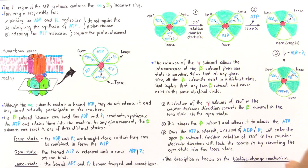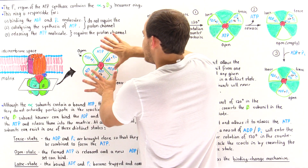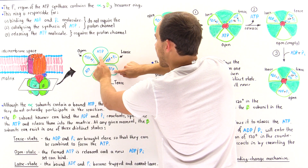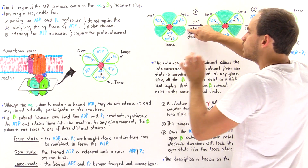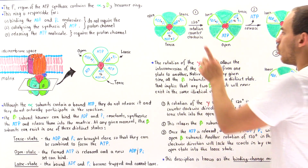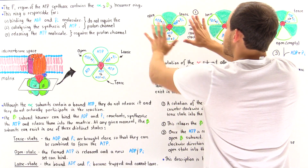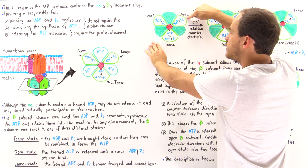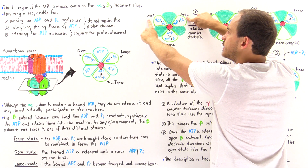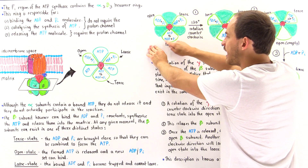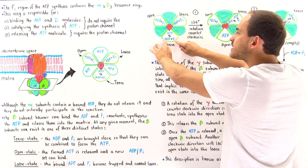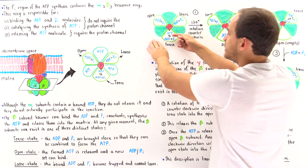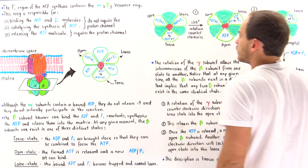Let's begin with the initial diagram. Note that I've omitted ATP from the alpha subunits since they don't participate in catalysis — only the beta subunits do. In this conformation, one beta subunit is in the Tense state, another in the Loose state, and the third in the Open state. Only in the Tense state are ADP and orthophosphate brought close enough to react and form ATP, creating an equilibrium between reactants and products.